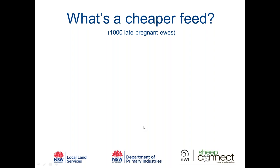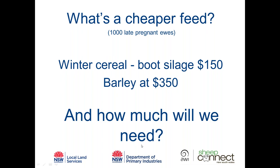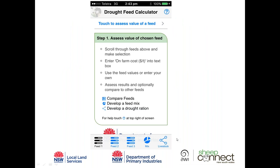So why would we use the Drought Feed Calculator? It's a simple tool you can use in the paddock or driving around in the ute, and it can help you answer a number of questions. We're going to work through a quick example: what's a cheaper feed? We've got a thousand late pregnant ewes to feed — we can get winter cereal silage in the boot stage at $150, or barley at $350. Which one's cheaper?